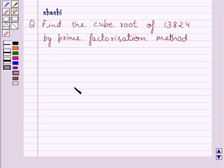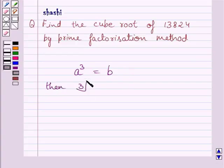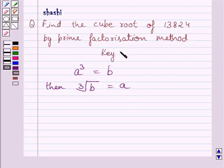First of all, let us understand that if a and b are two integers such that a³ = b, then the cube root of b is equal to a. This symbol denotes cube root. We will use this fact as our key idea to solve the given question.